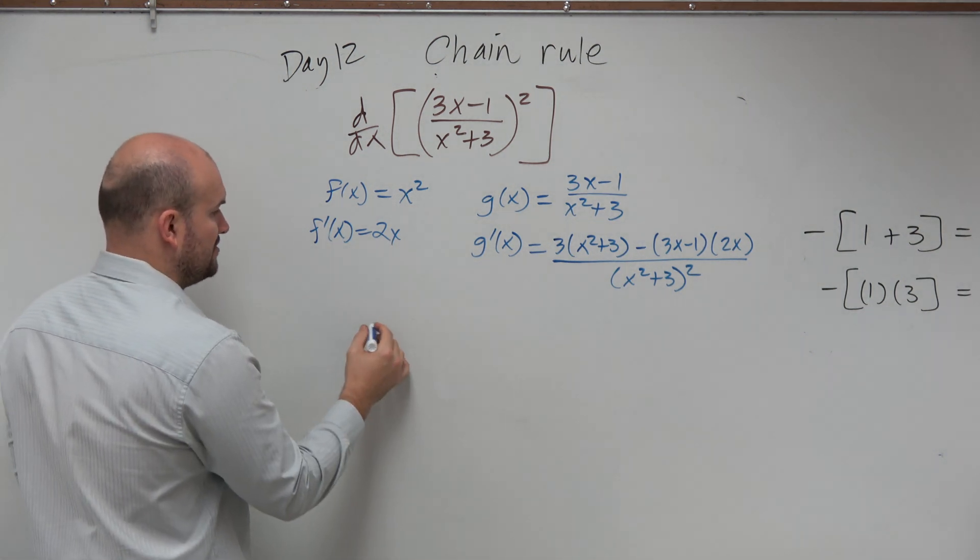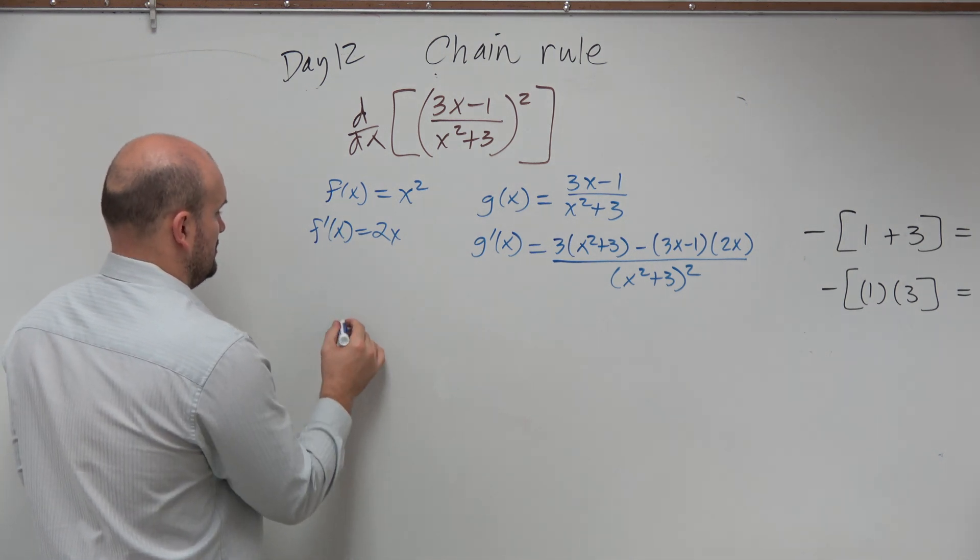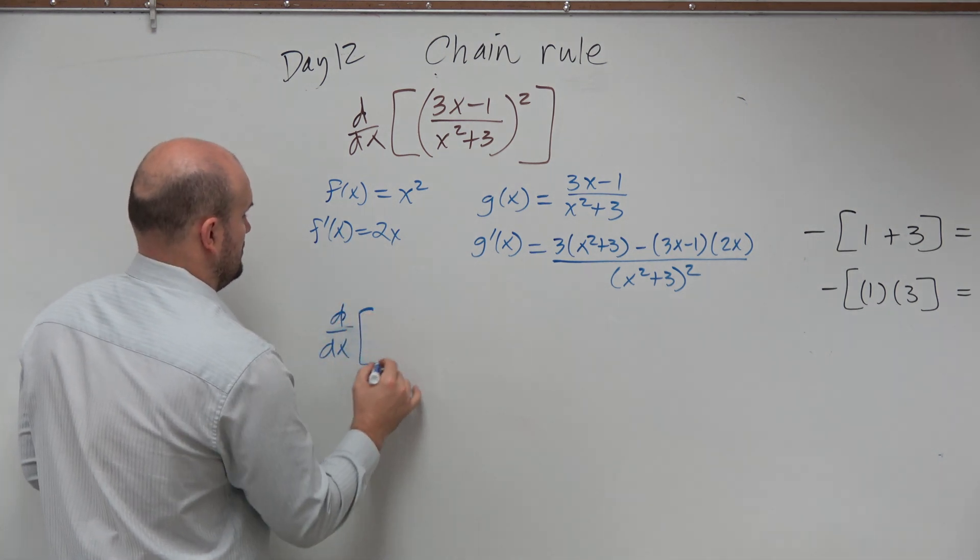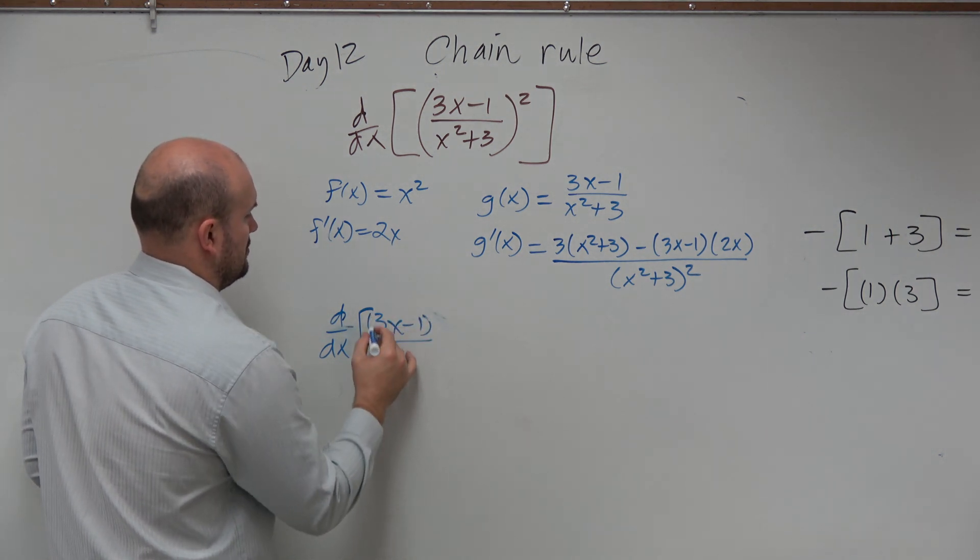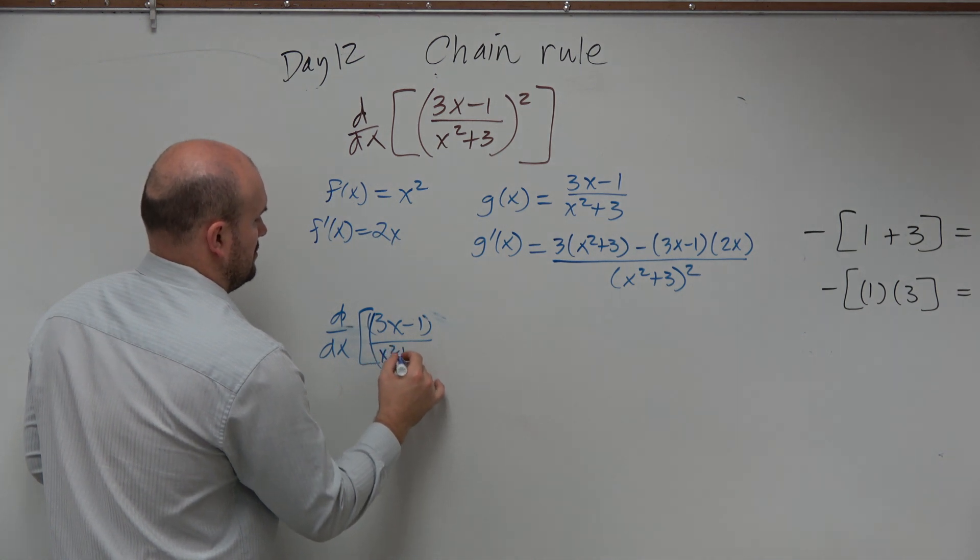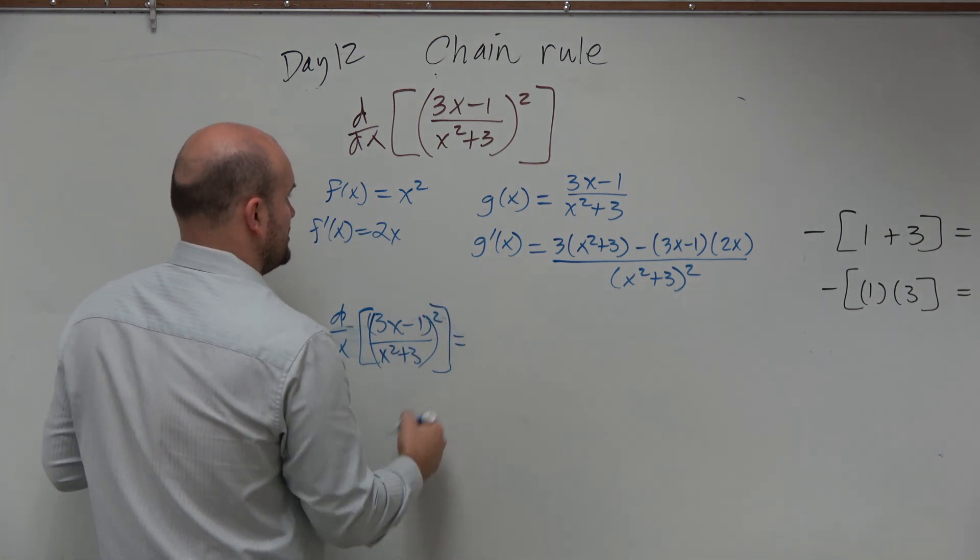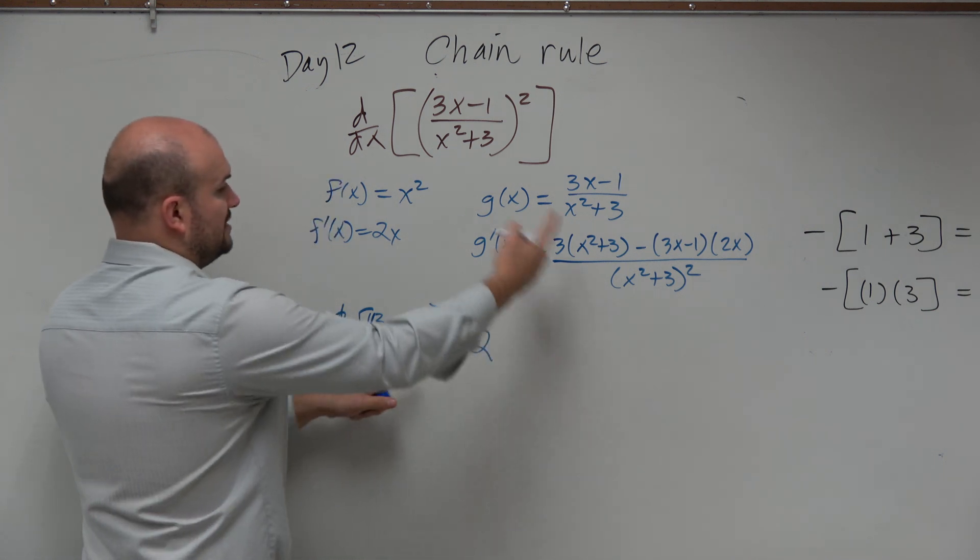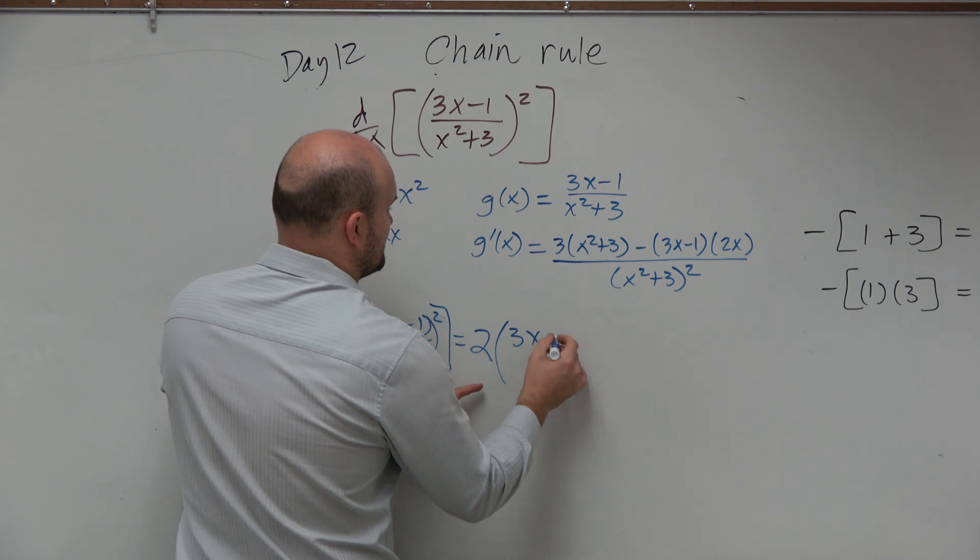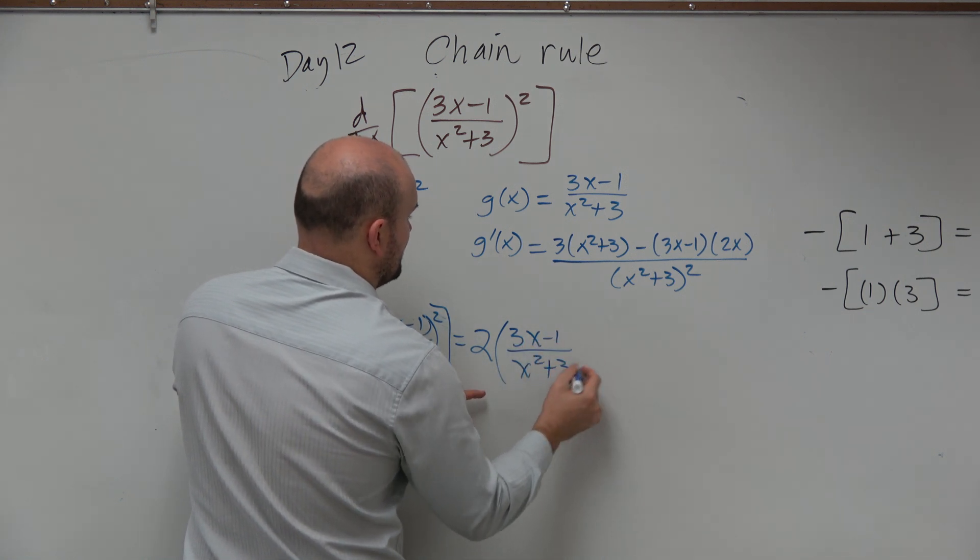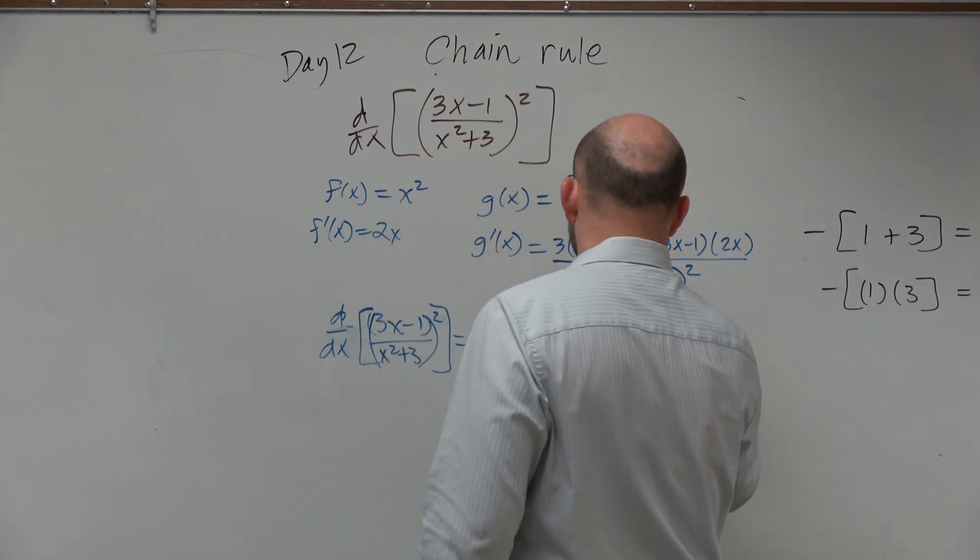So I'm going to take 2, plug in g of x to 3x minus 1 over x squared plus 3, and then times it by g prime of x, which looks like this.